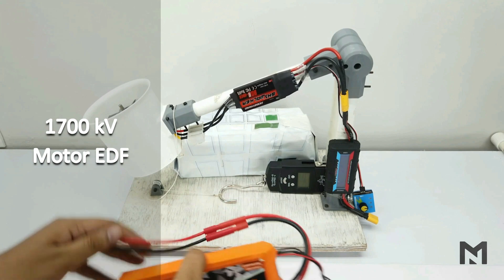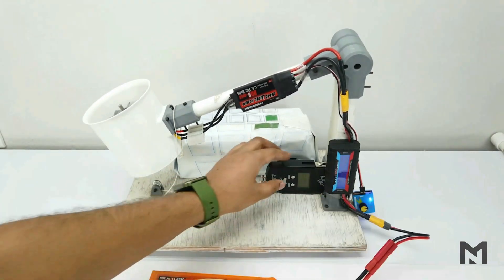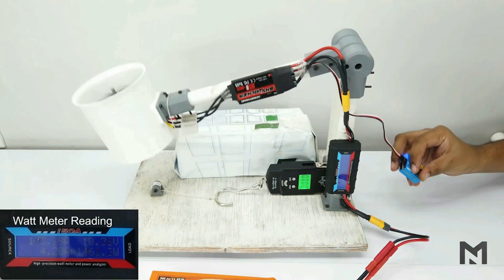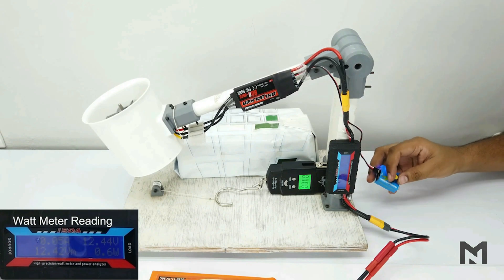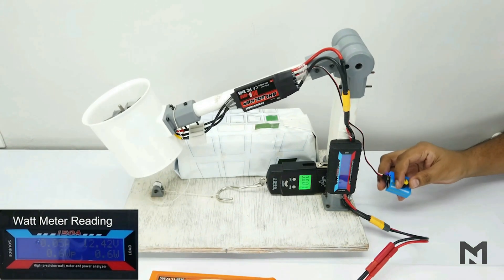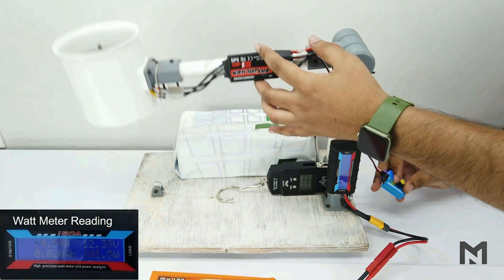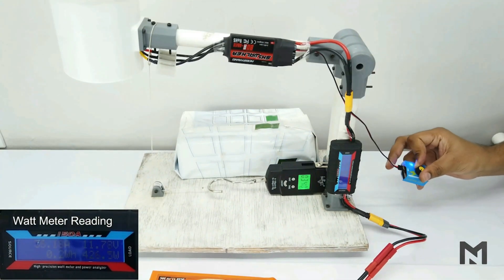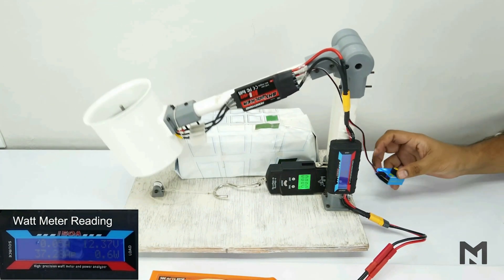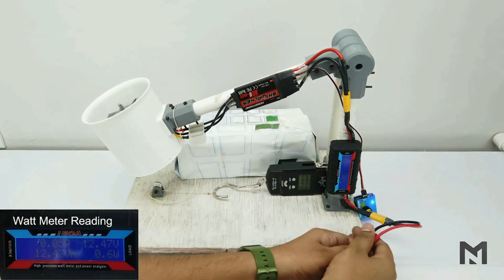So, let's start the thrust test by connecting a 3S battery. So, I have performed the thrust test at 3S battery and now I will swap it with a 4S battery.